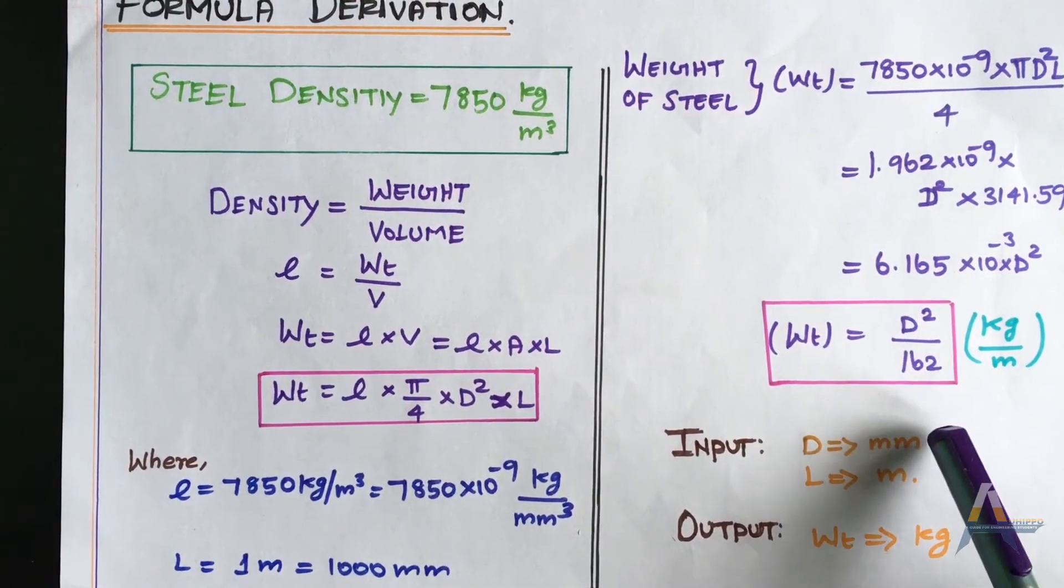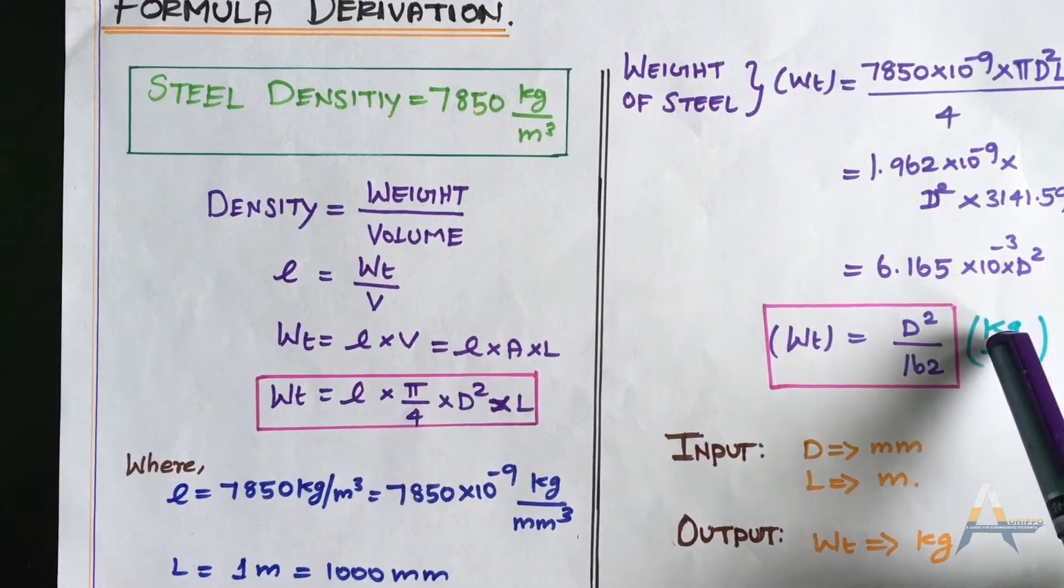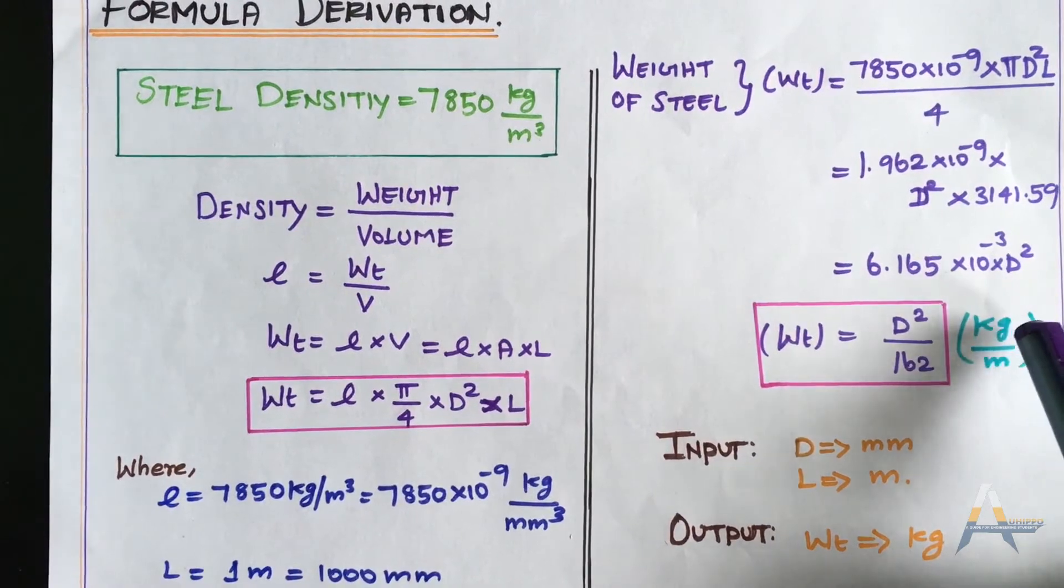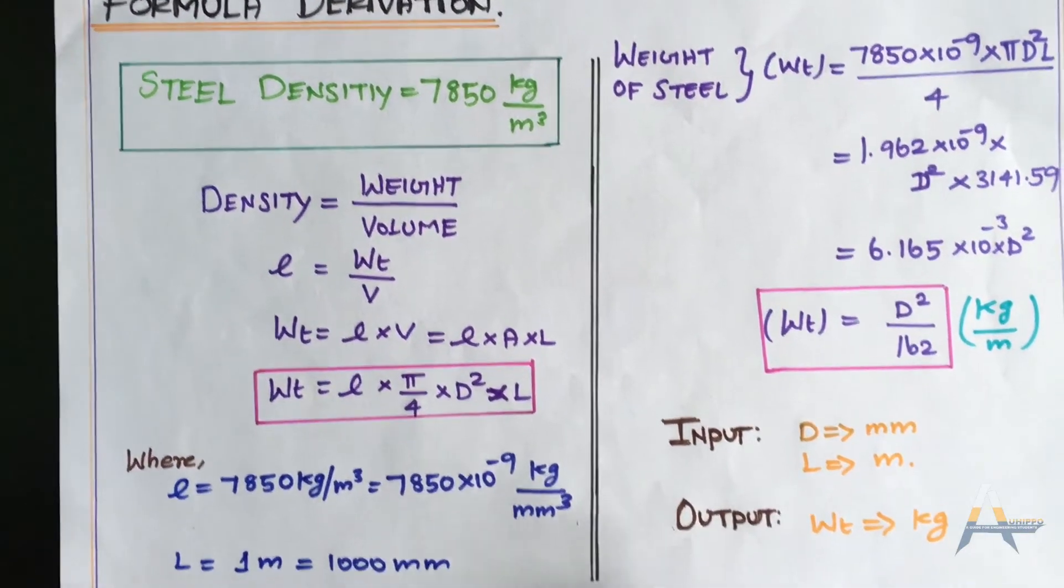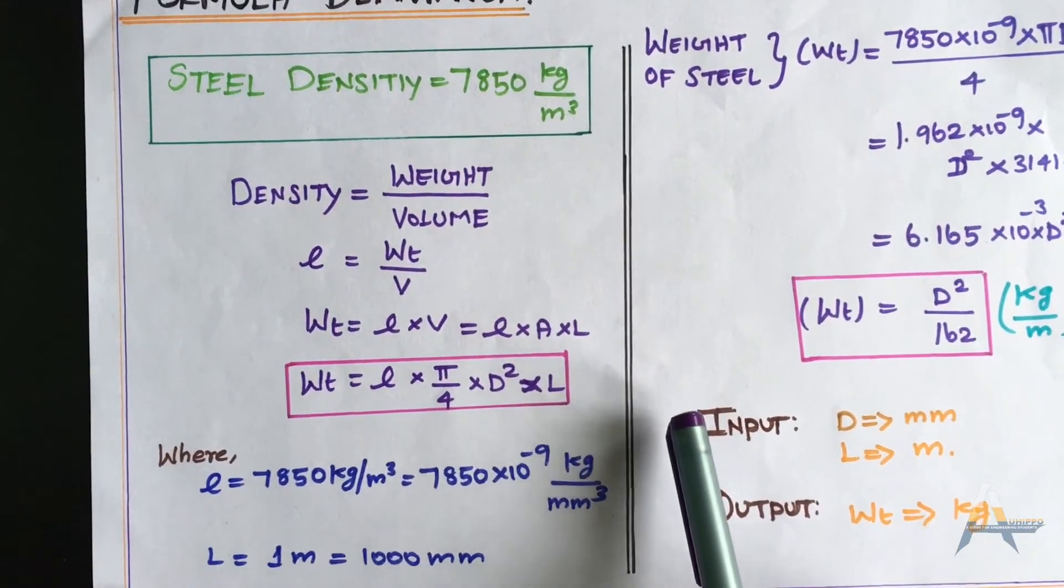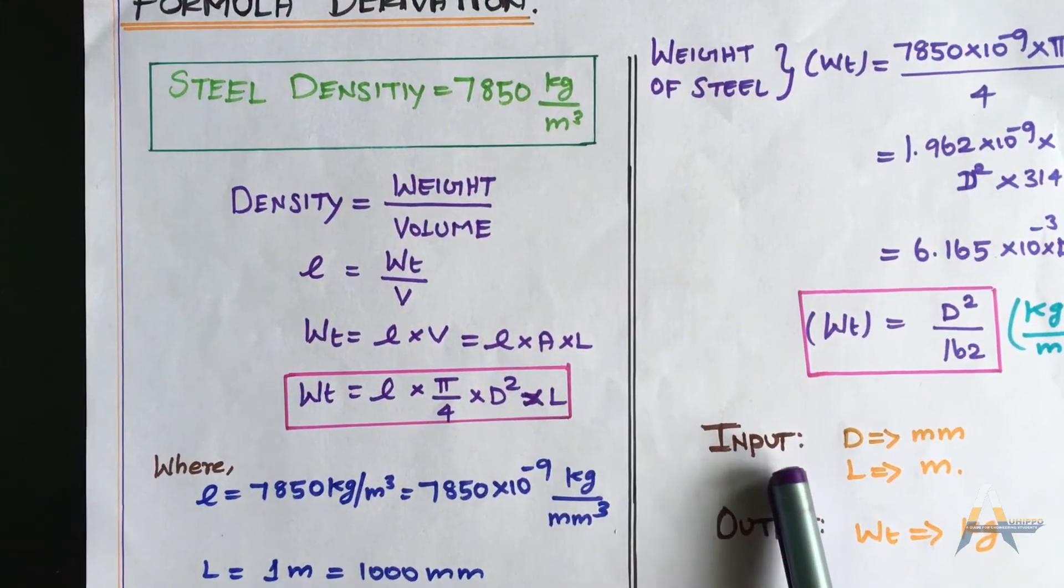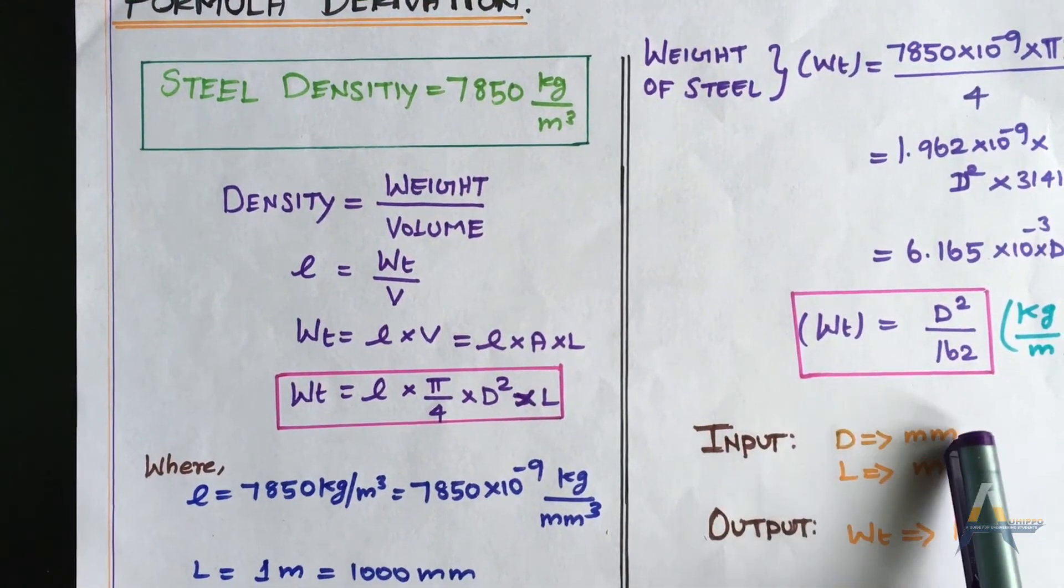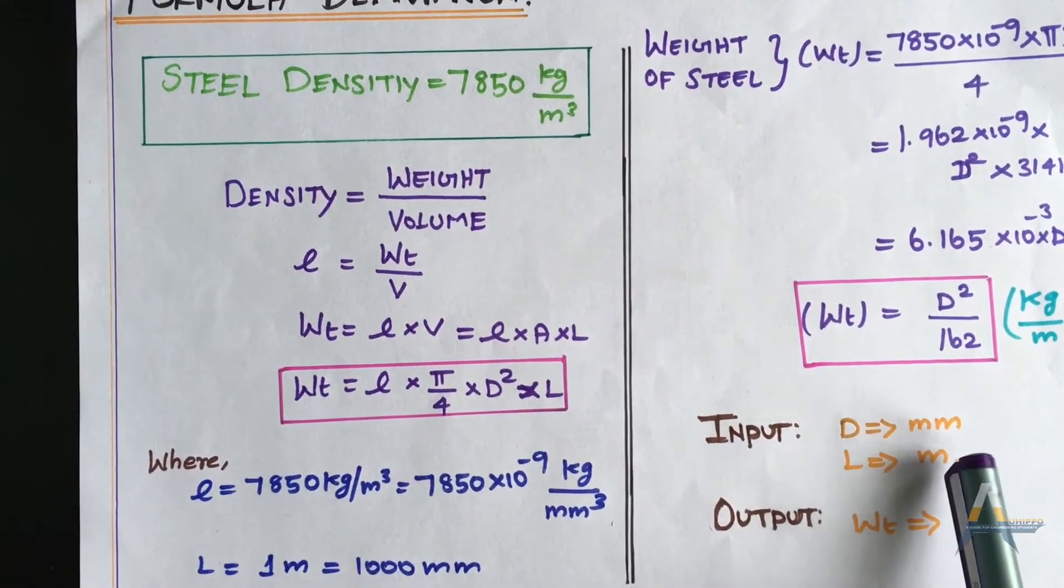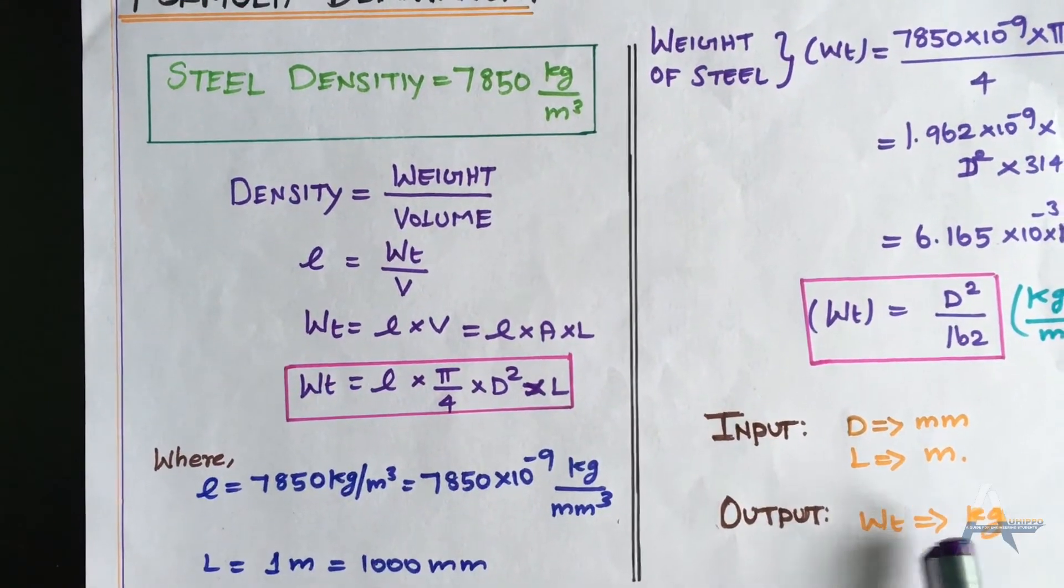Multiplying by the running length gives us the weight of the steel. The input is diameter in mm and length in meters, and the output is weight in kg.